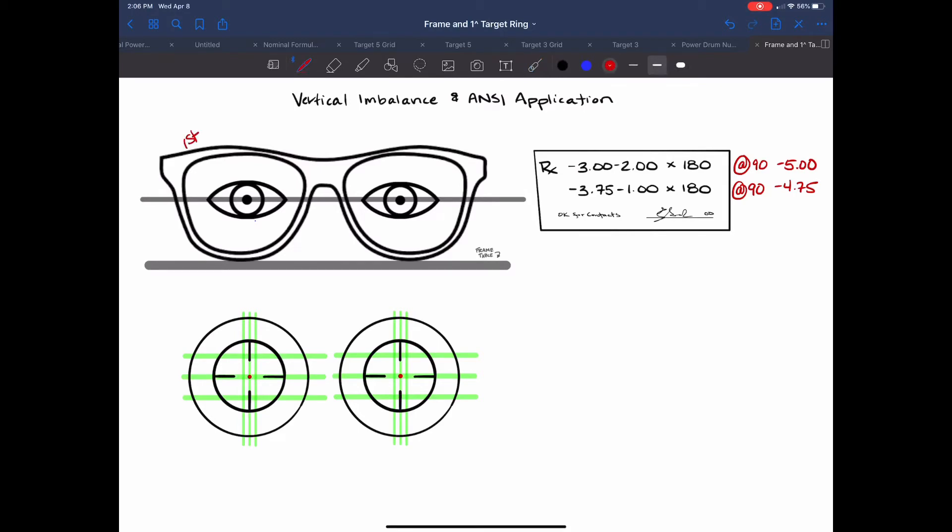So first we'll center this one and when we look into the lensometer we're going to be attempting to center this one perfectly. We're going to locate the optical center we're going to be able to move the frame table up and down move the lens back and forth and center this optical center. Then we're going to spot it.